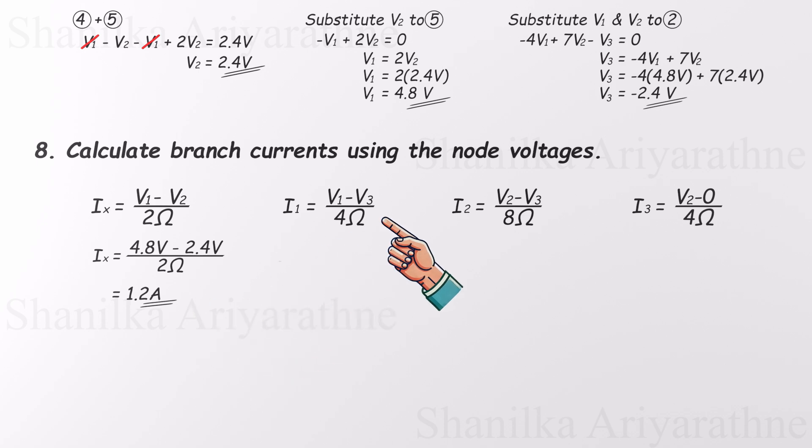Next, I1 is V1 minus V3 divided by 4. That's 4.8 minus negative 2.4 divided by 4, which gives 1.8 amps.